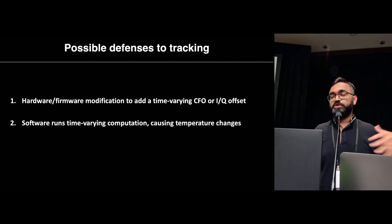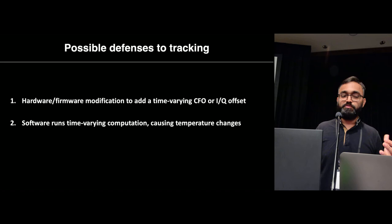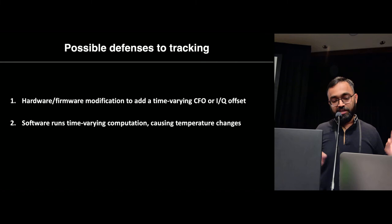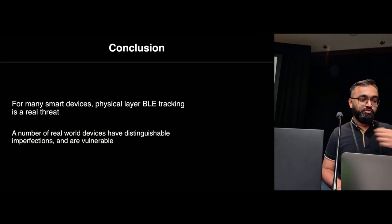There are some possible defenses against this tracking vulnerability. One approach is hardware or firmware modifications to add a time-varying CFO or IQ offset, which could confuse an attacker trying to fingerprint or track a device. Another idea is running a software process that causes temperature changes via computation — but that would seriously drain battery. The first idea seems more reasonable, though it requires implementation as future work.